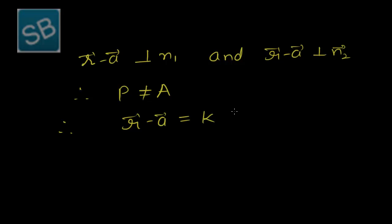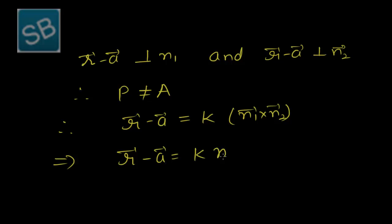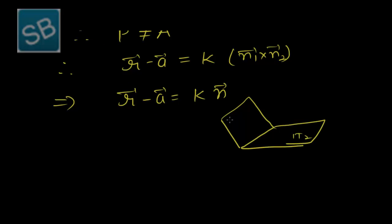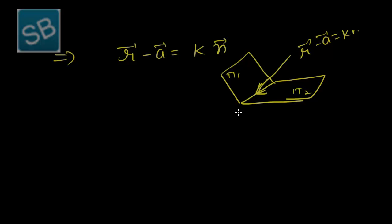We can write r minus A equals k times n1 cross n2, that is r minus A equals k times n. This is the required equation, where A is any point on the intersection of the planes and r also lies on it. The vector n1 cross n2 is perpendicular to both these planes.